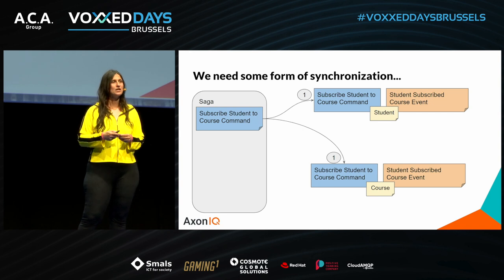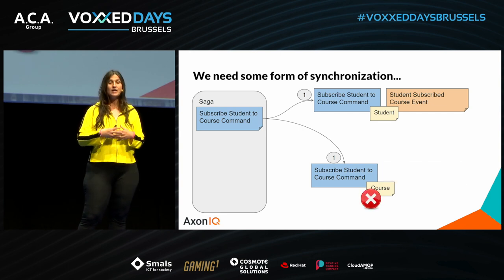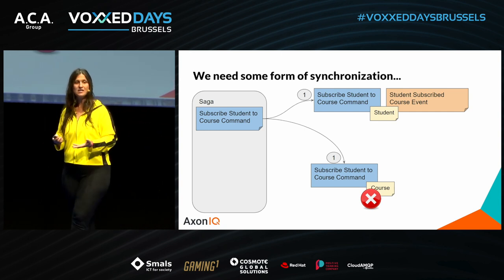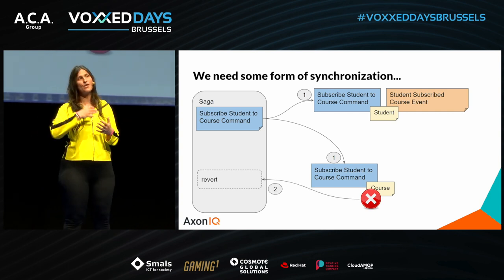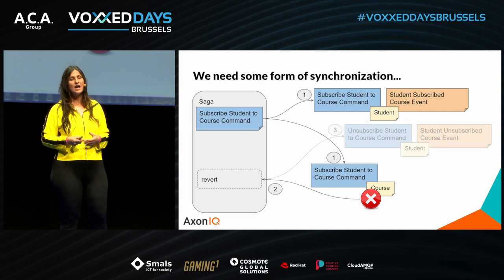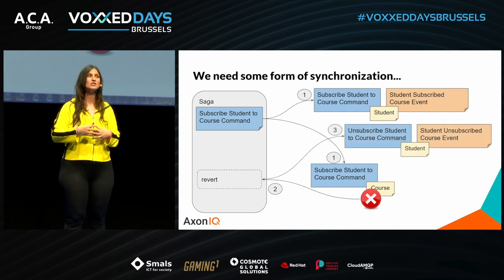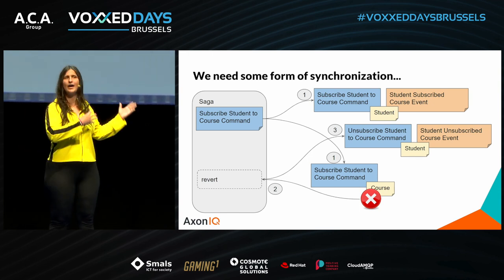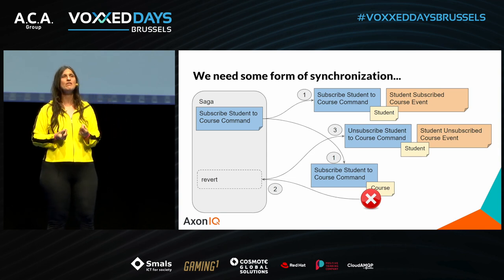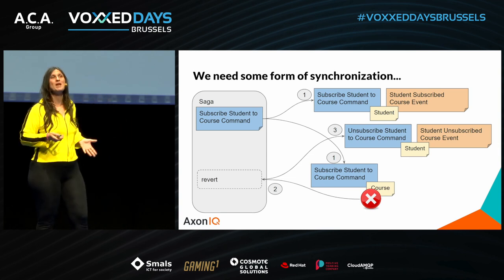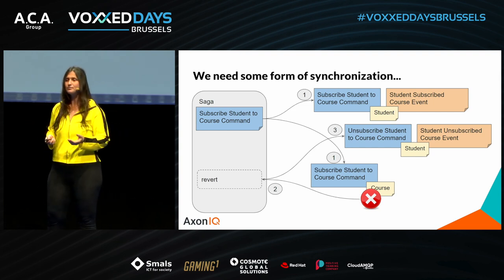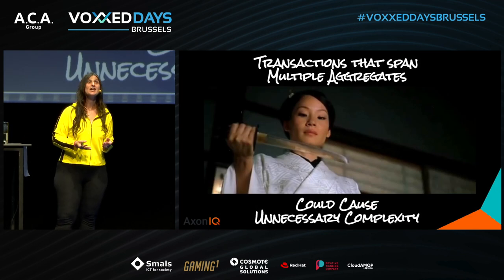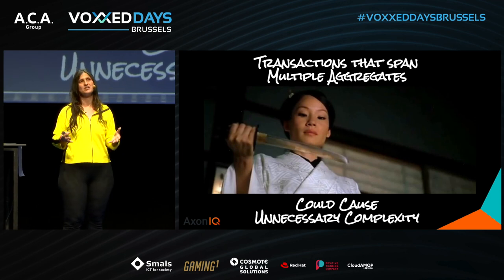Unless one of the two aggregates refuses the command — for example, when the course is fully booked. In that case, the orchestrating component must react by sending another command to the student to cancel the previous subscription. There are other solutions, but they all introduce complexity. This is the fifth and final villain: transactions that span multiple aggregates can cause unnecessary complexity.